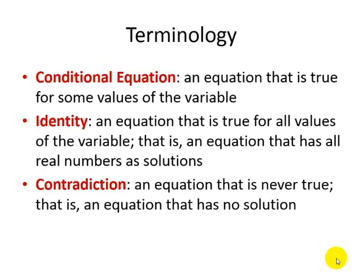A conditional equation is an equation that is true for some values of the variable. All of the previous examples we worked are conditional equations. An identity is an equation that is true for all values of the variable — that is, an equation that has all real numbers as solutions.